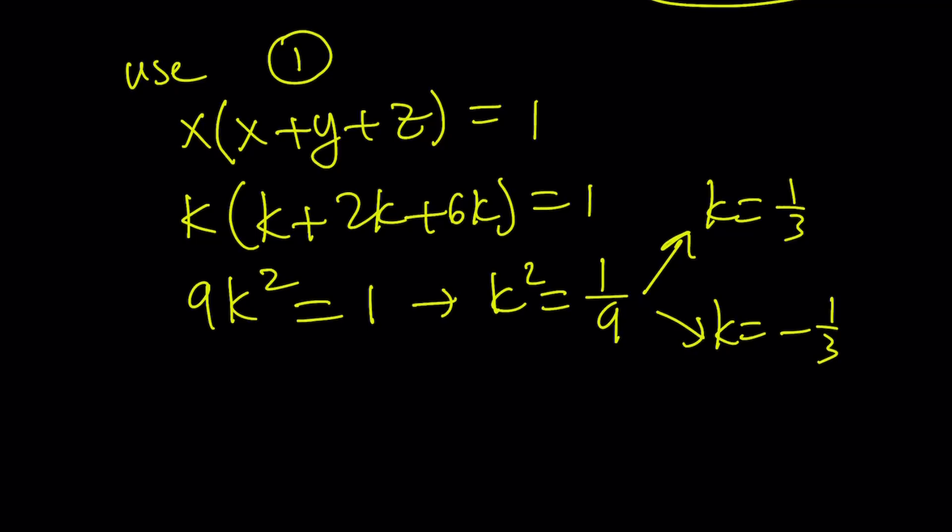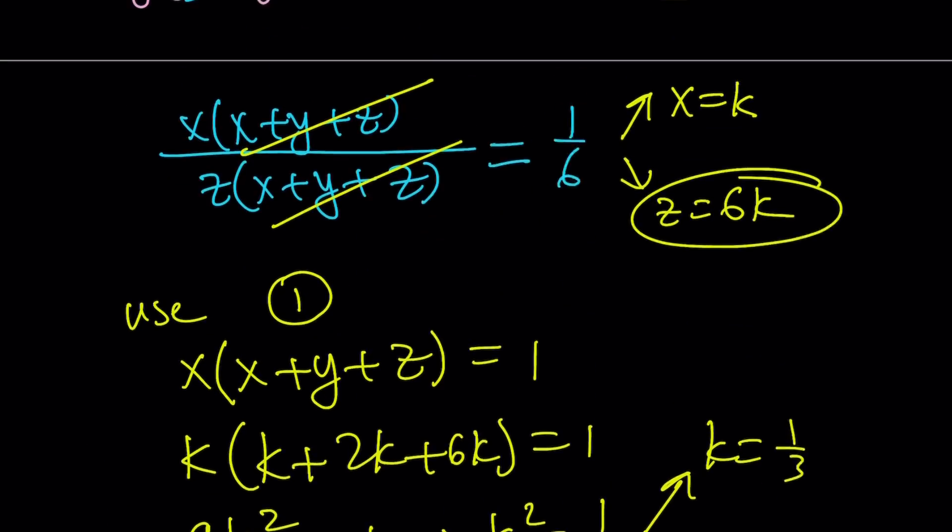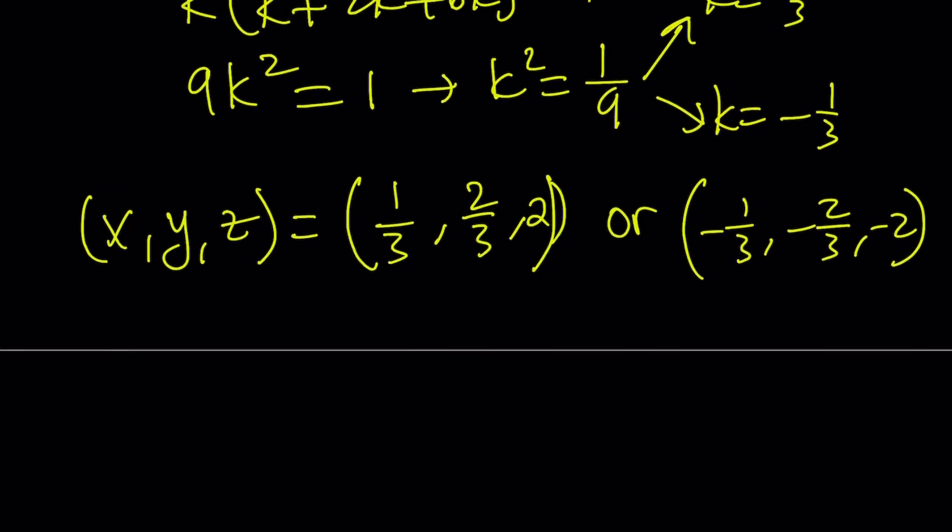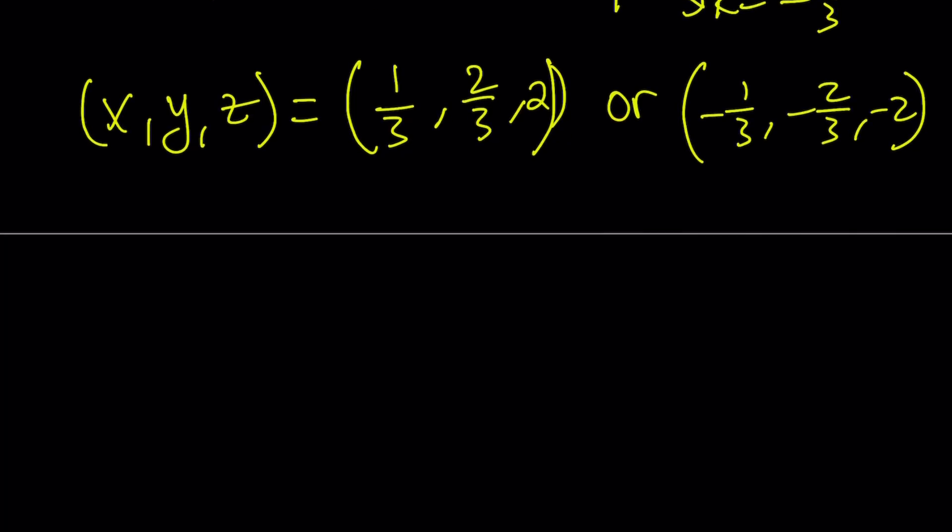So two values for k means that we can find two sets of values for x, y, z. From here, x, y, z is going to be—and I can write it as an ordered pair because obviously they're not going to switch around because that wouldn't satisfy the system. But x, y, z can be written as: If k is 1 third, notice that x is equal to k, so x is going to be 1 third, y is going to be 2 thirds and z is going to be 6 thirds but I can write it as 2, or it's going to be the opposites: negative 1 third, negative 2 thirds and negative 2. Those are going to be the possible ordered triples for x, y, z. Now, let's go ahead and talk about the second method.